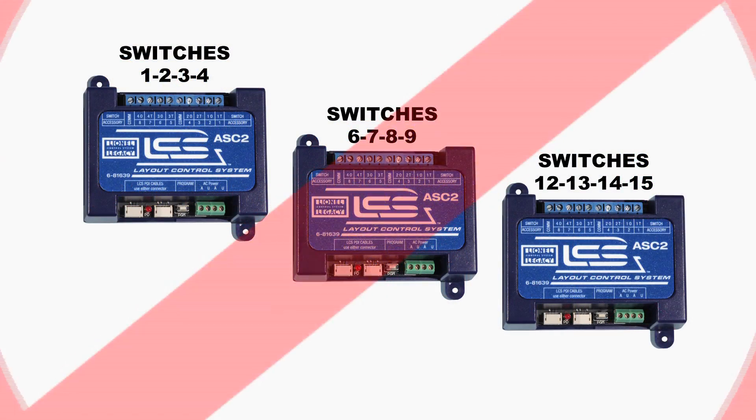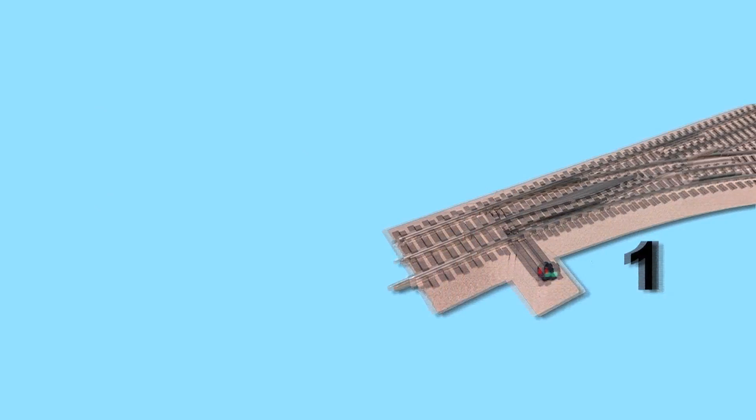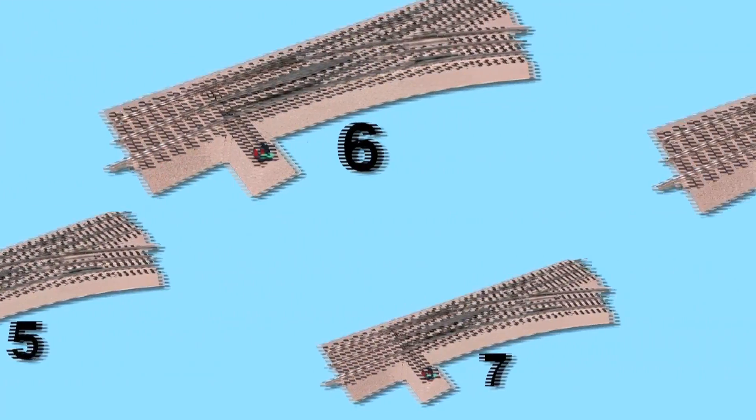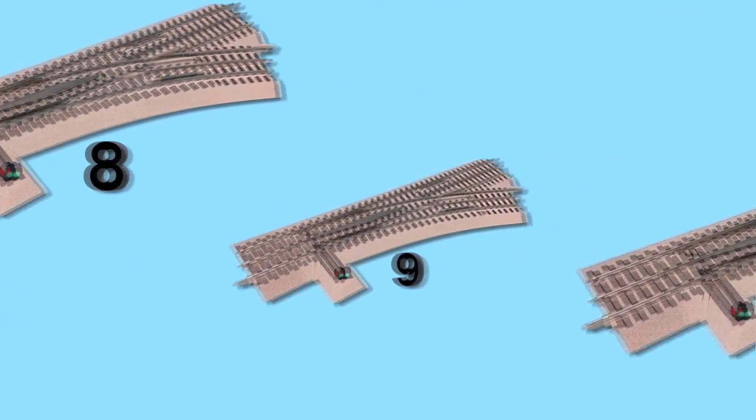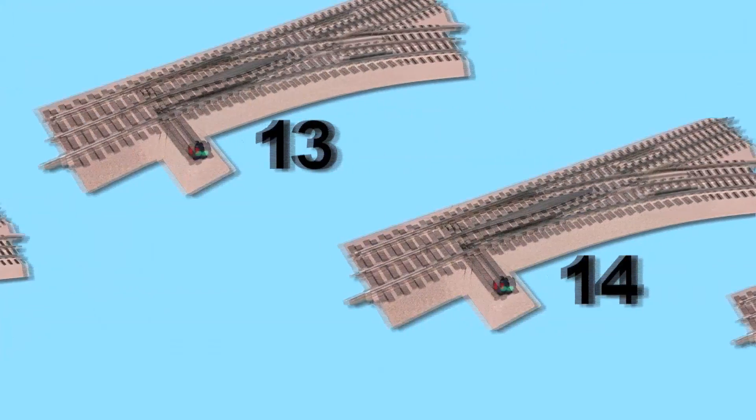Remember when we said not to skip ID numbers for switches? The reason is, if you install an STM2, you can monitor the position of 16 different switches, and they are all in sequential order without skipping.